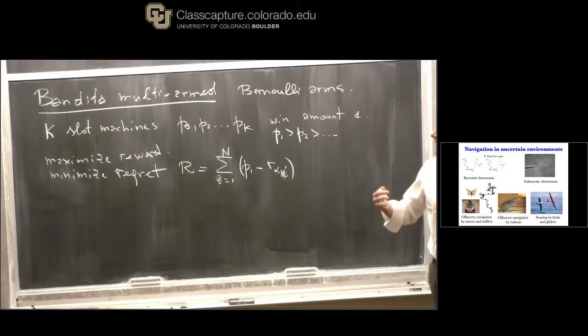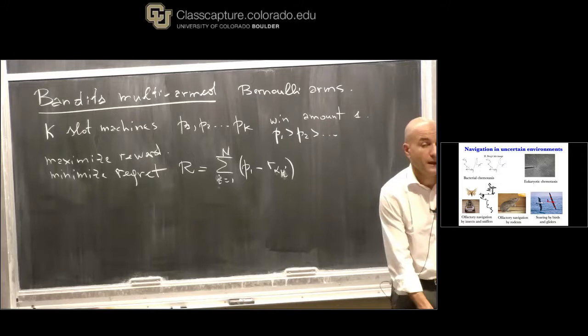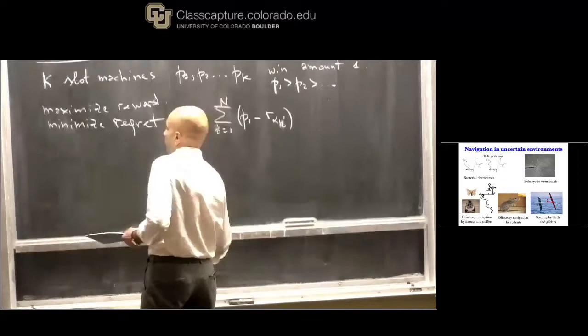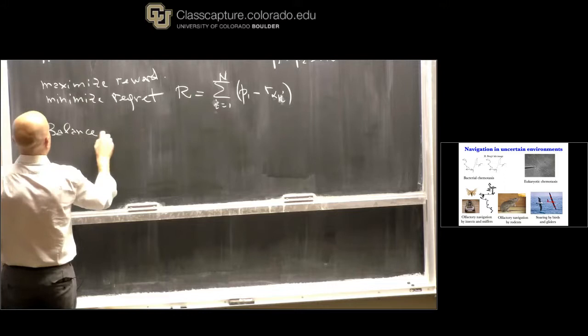The issue is that you would like to play the suboptimal arms as little as possible, but of course you don't know where they are. This is an example of what is called the balance of exploration and exploitation.